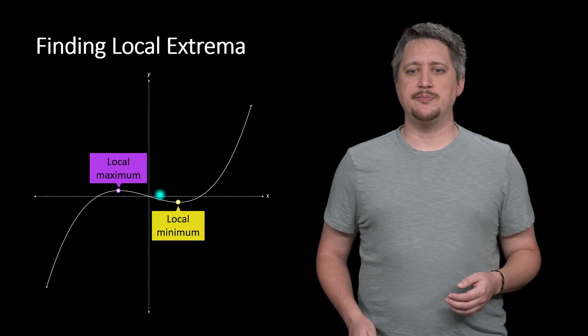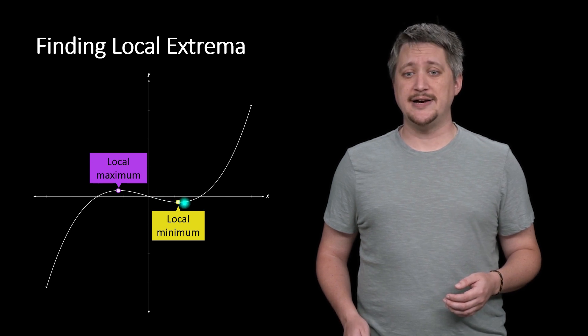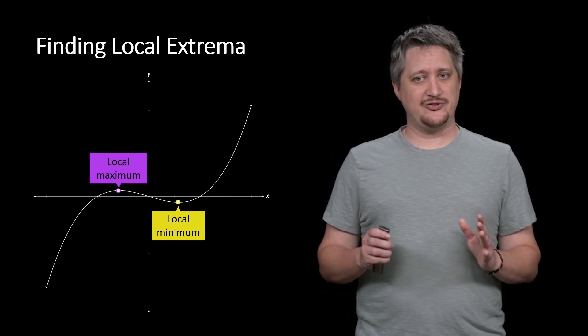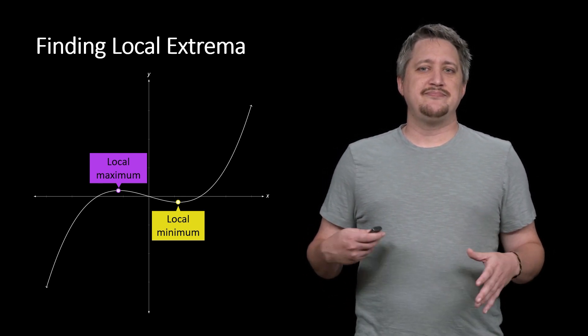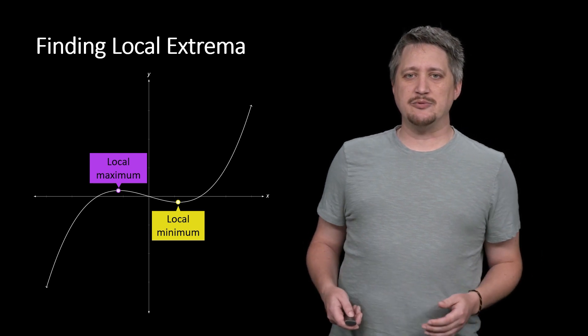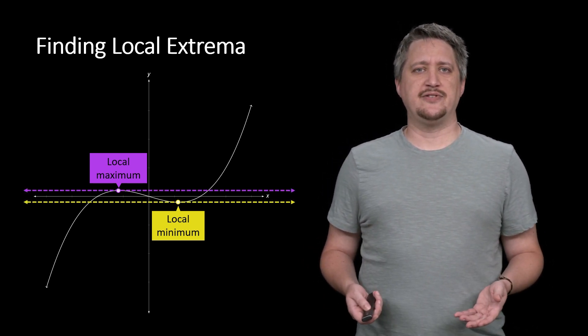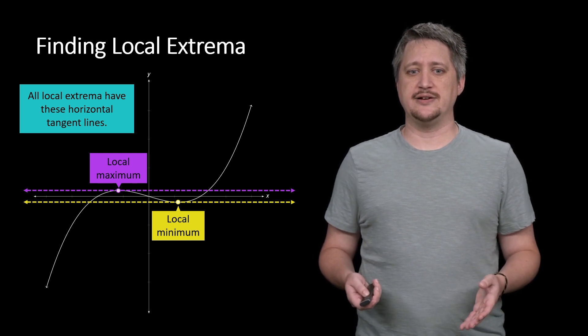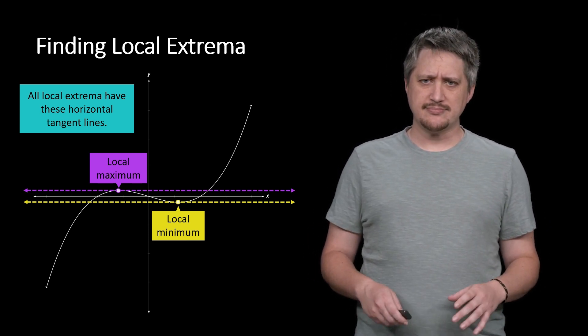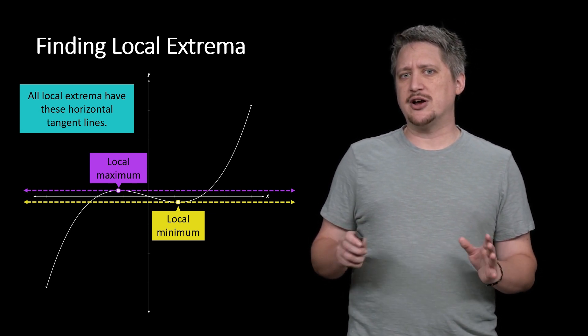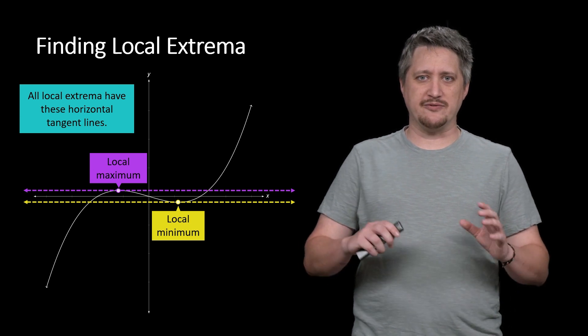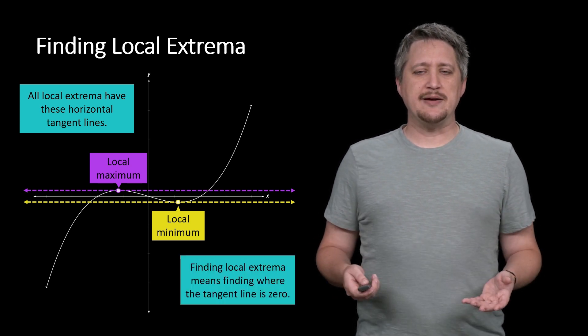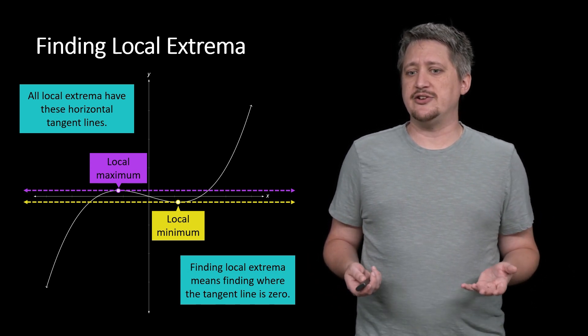And likewise, the one on the right here is a local minimum, again, because if you look nearby, it's the lowest point. Not that it's the biggest or lowest points overall, because we have the edges of the graph, it's just that local area. And the big idea here that we want to notice is that if we look at the tangent lines, tangent lines for these things are both horizontal. And in fact, any kind of extrema will have horizontal tangent lines, as long as it's within both sides.